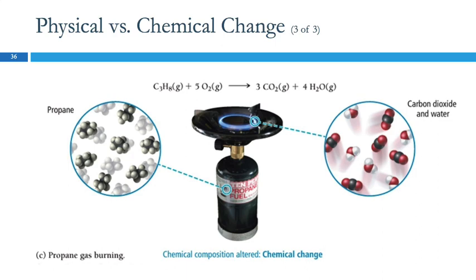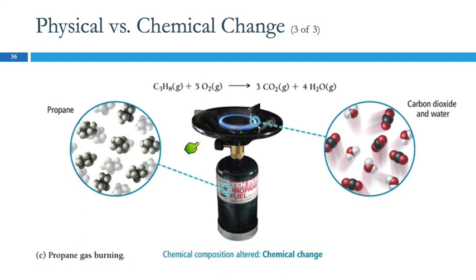Here we have propane, like you would find in your gas grill. The propane molecules combine with oxygen when the gas burns, and those particles rearrange to make carbon dioxide and water. So now we've got water molecules and carbon dioxide molecules where before we had propane molecules — the particles have changed, so that's a chemical change. In a physical change, you still have the same particles. In a chemical change, the particles change — the original substance is destroyed and a new substance is formed.